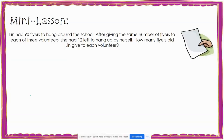Previously, we've learned that we can use inverse operations to solve one and two-step equations, and we used both hanger diagrams and tape diagrams to model this concept. Today, we are going to learn how to solve real-world problems by writing and solving multi-step equations with a variable to represent an unknown value.